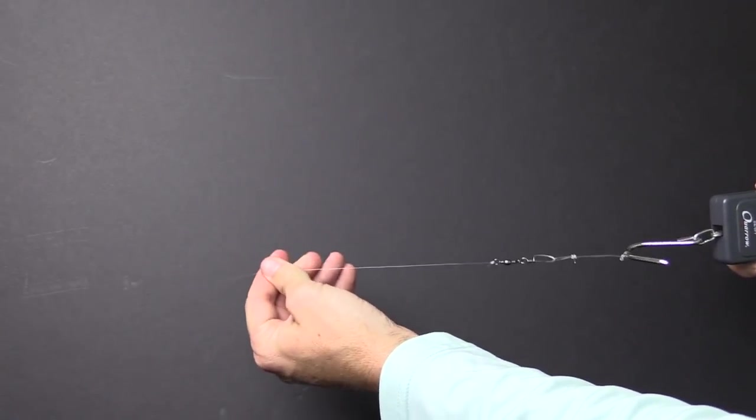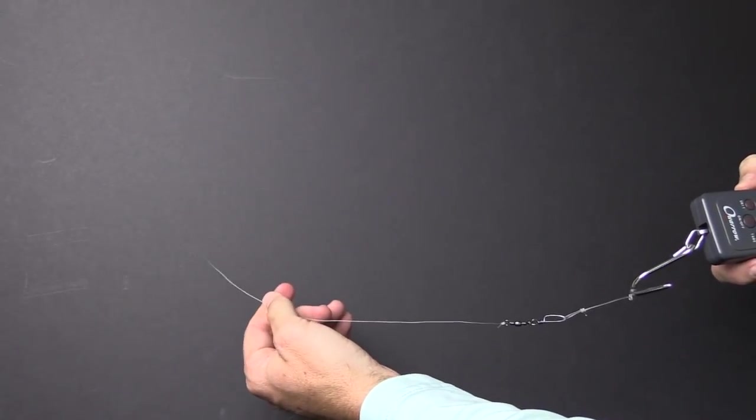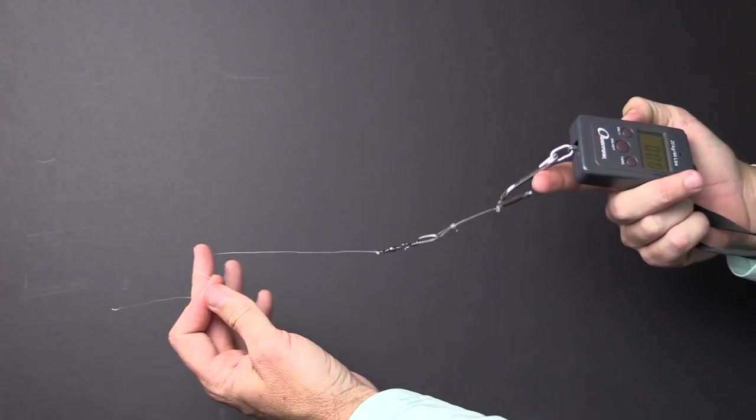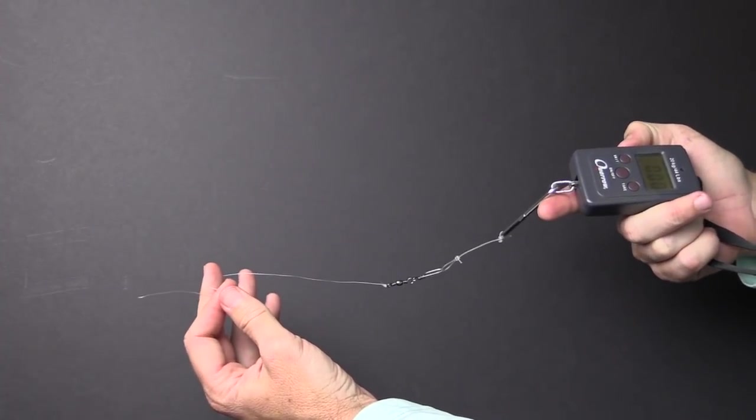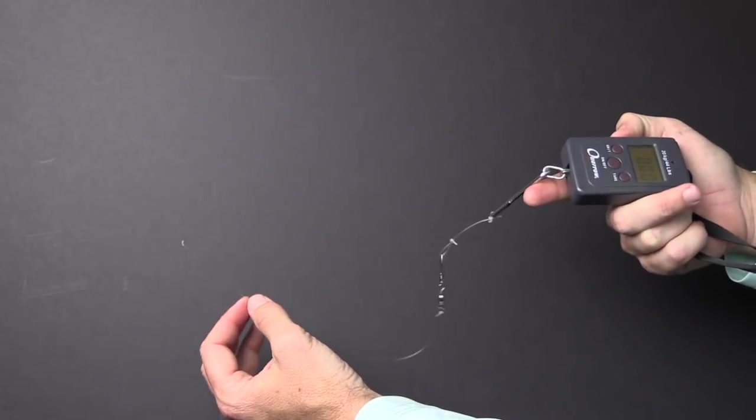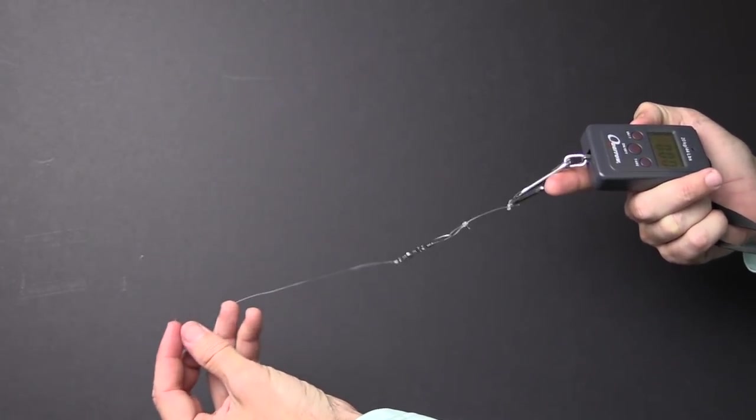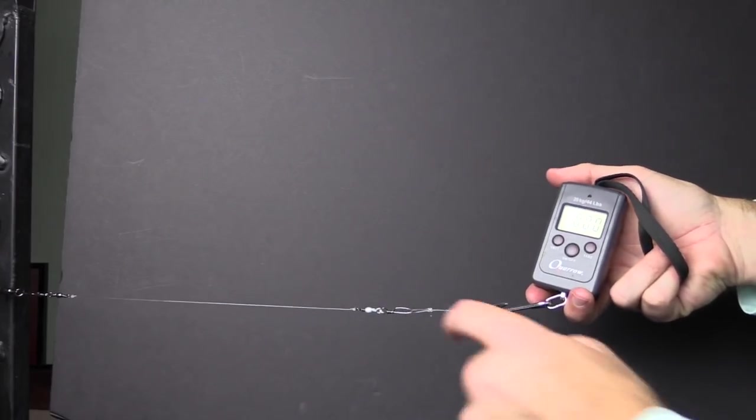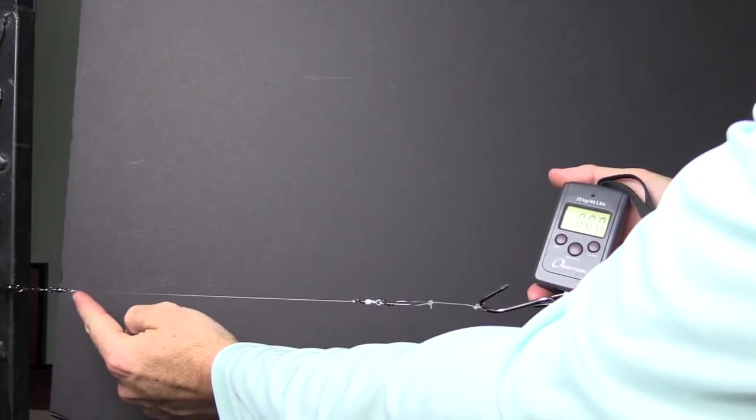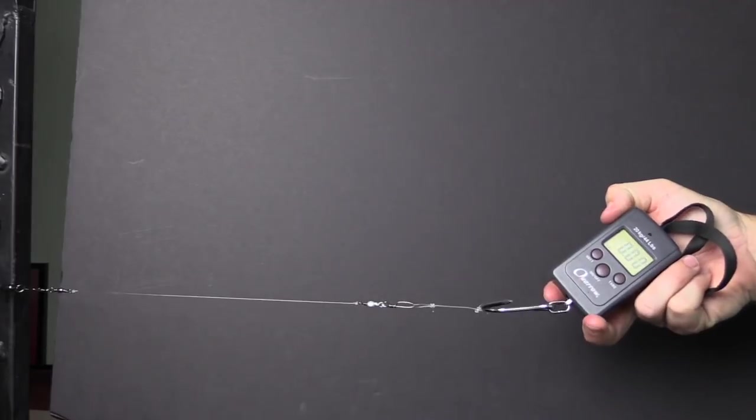The uni knot failed at a surprisingly low rate there. Both of these knots had five wraps to make it a true comparison on the actual knot's performance. All right, so round two - I just changed it up so we have the uni knot over here on the near side, the clinch knot far side.